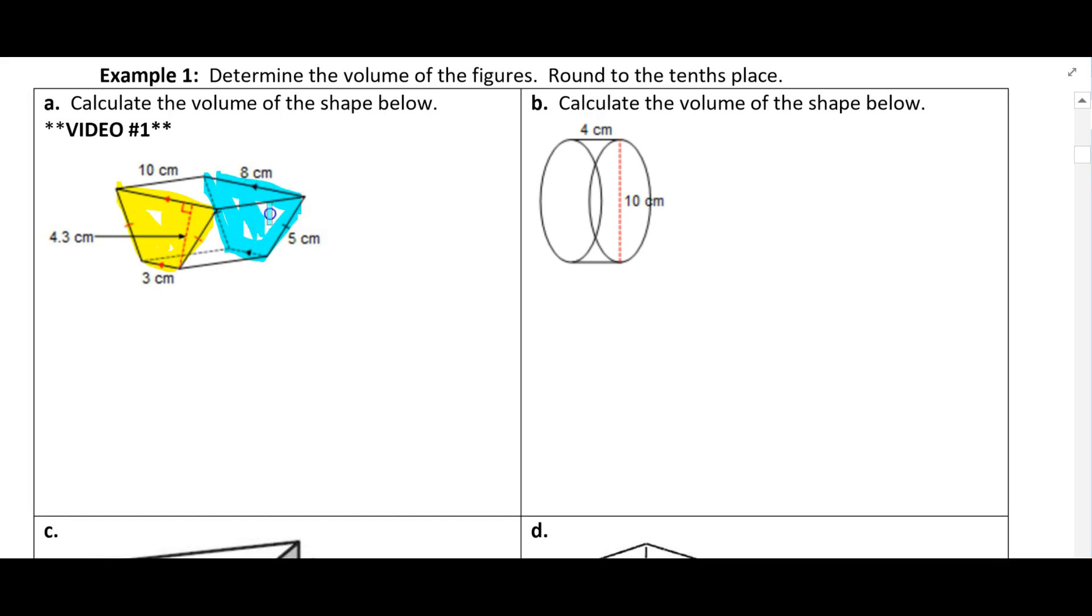So this prism happens to be turned on its side. At first look, you might think that this rectangle on the bottom is the base and this rectangle on the top is another base, but they're not because, again, for a prism, the bases have to be parallel and congruent. So the bases for this prism are the trapezoids.